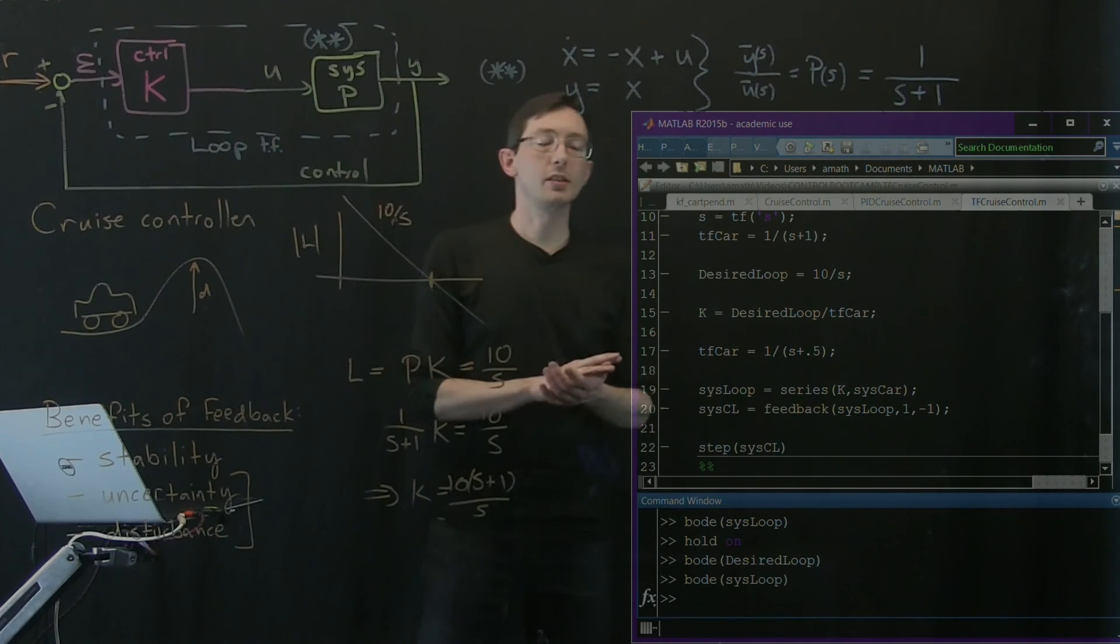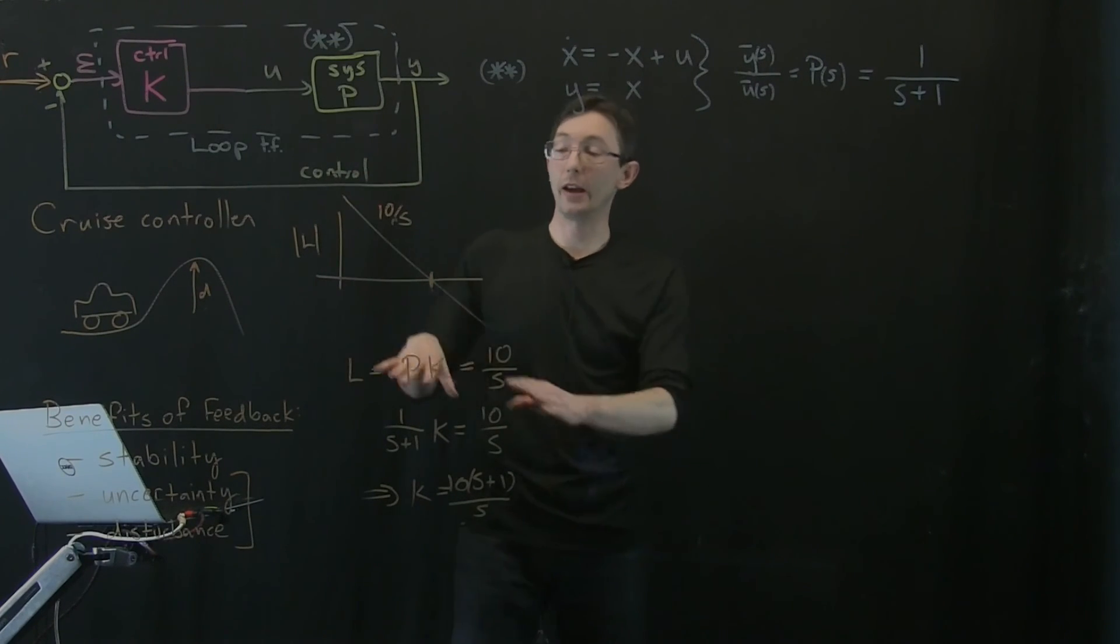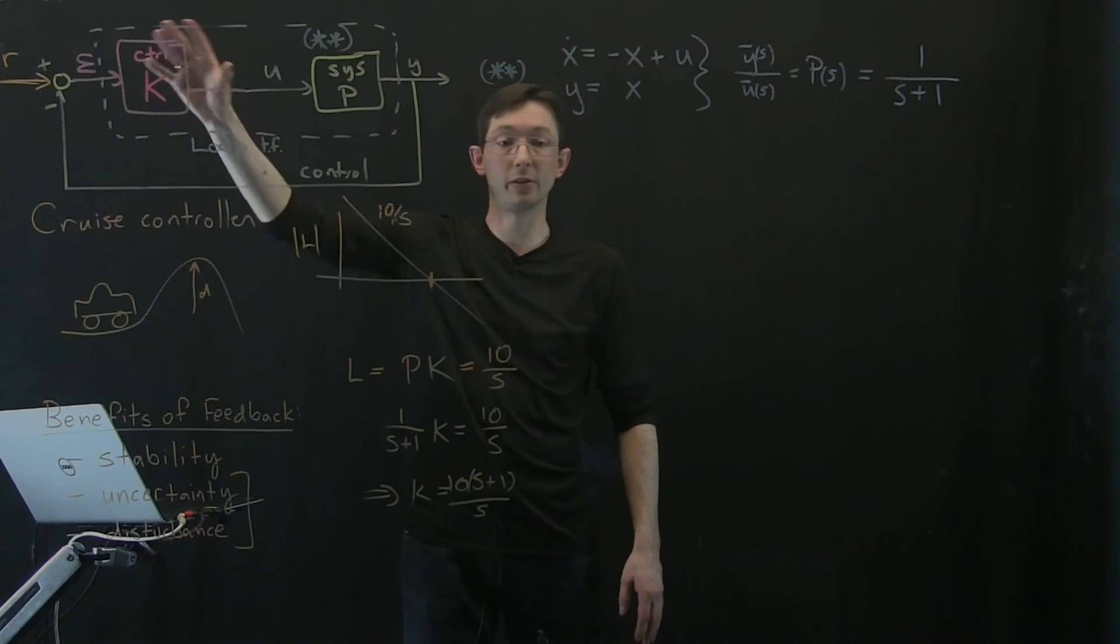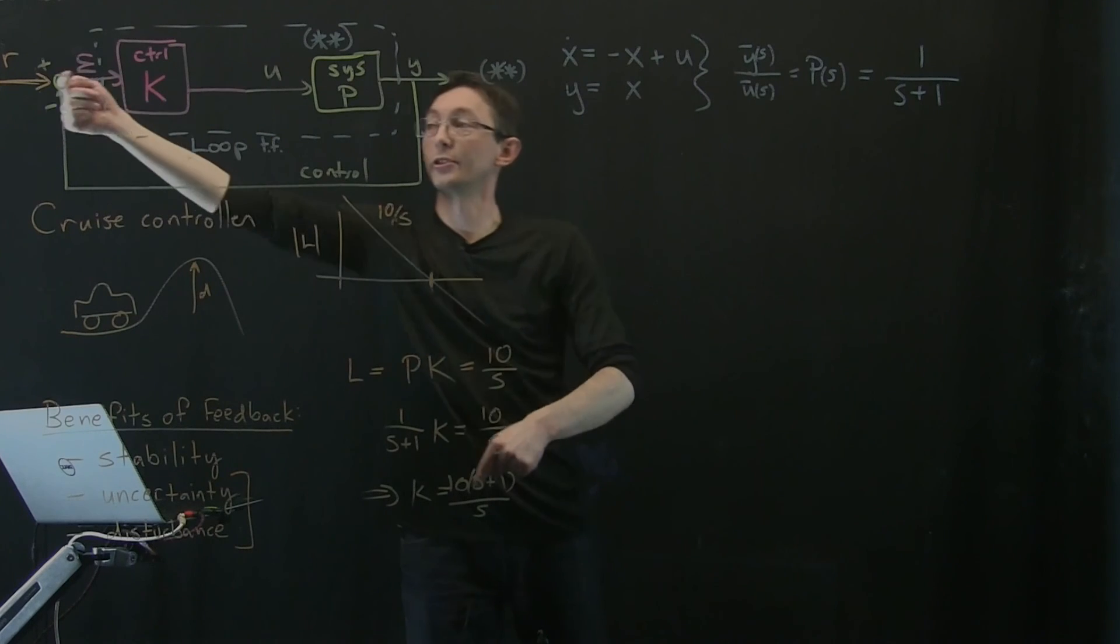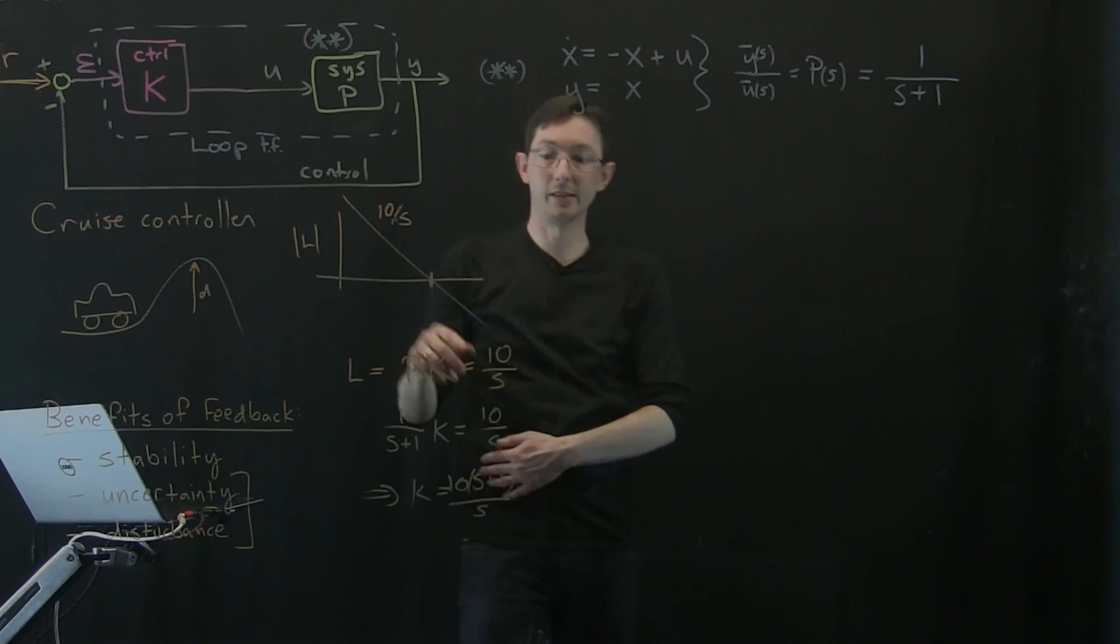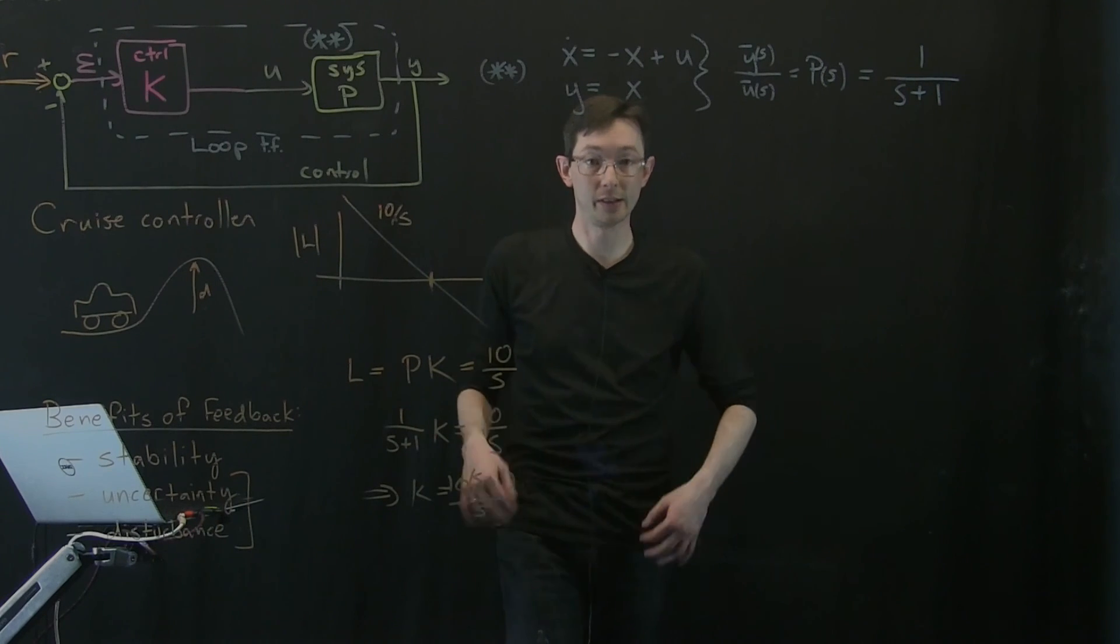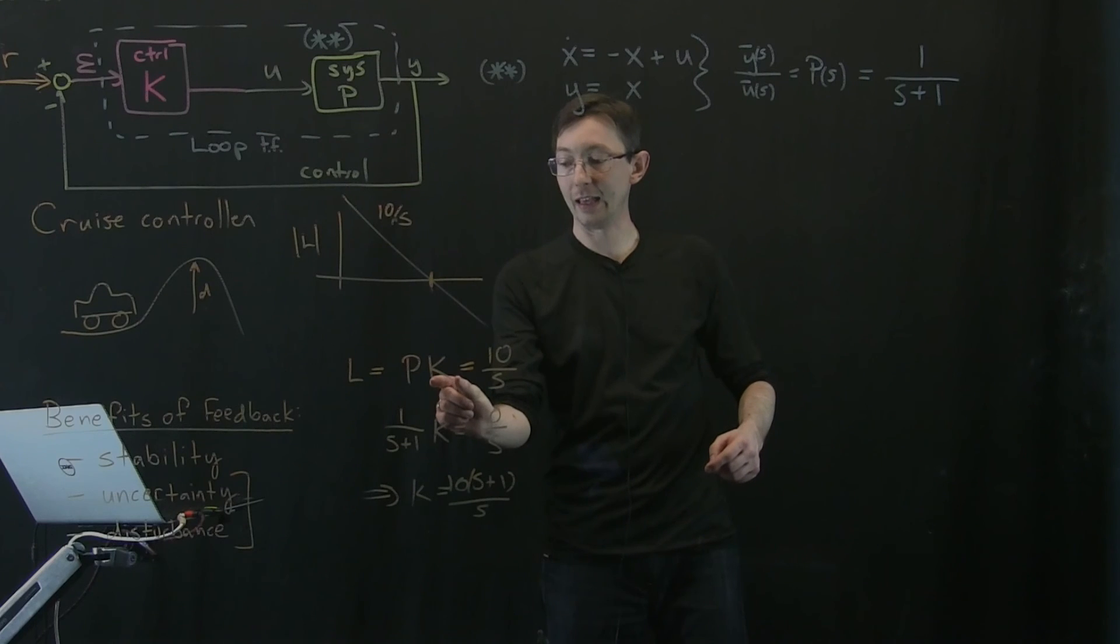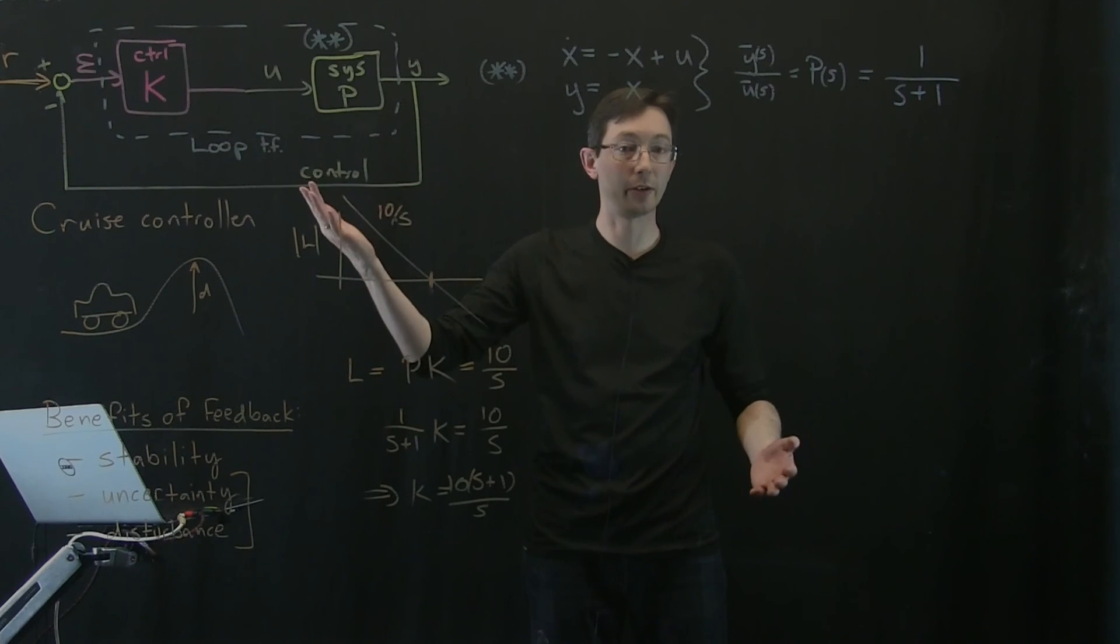So that gives you a very rudimentary idea about how I can use those ideas of designing the shape of the loop transfer function to have a certain behavior. Like I want it to have high gain at low frequencies so it tracks references and rejects disturbances. I want it to have low gain at high frequencies so it attenuates sensor noise. And sometimes I can do that by finding the k that makes p times k look like some gain times an integrator.